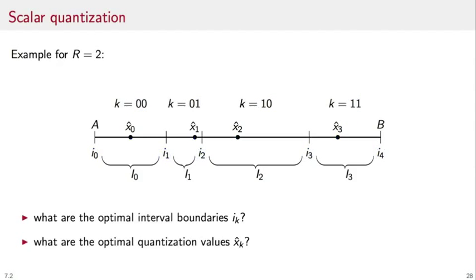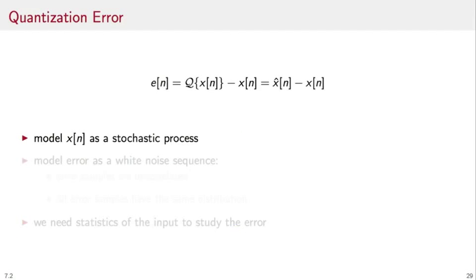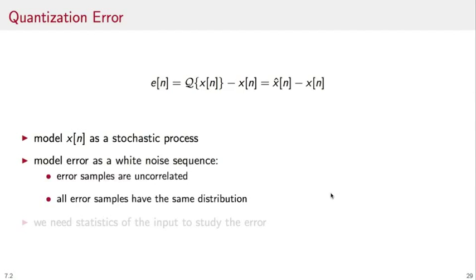The two natural questions at this point are, what are the optimal interval boundaries, i of k, and what are the optimal quantization values for each interval, hat x of k? To find an answer, let's consider the quantization error. So this is defined as the difference between the quantized value, namely the representative value for each interval, minus the real value. We model the input as a stochastic process, and we model the error as a white noise sequence. In other words, we assume that the samples are uncorrelated, and we assume that all error samples have the same distribution. These are rather drastic assumptions, but as a first approximation, they will give us a good feeling for the effects of a quantizer.